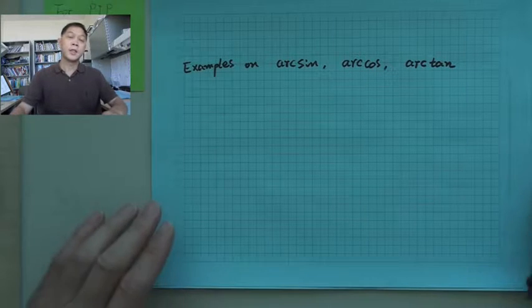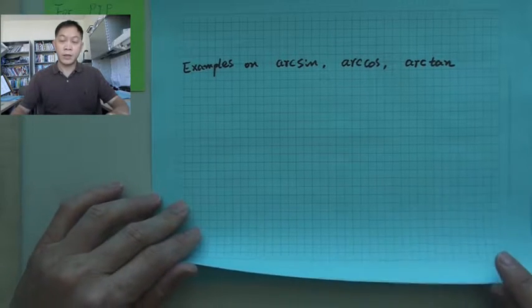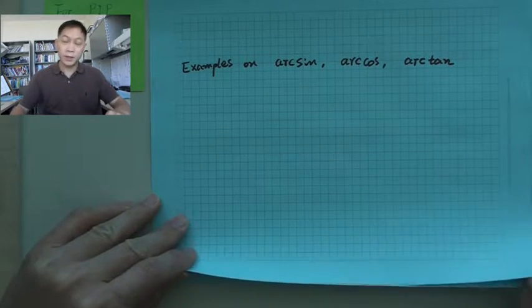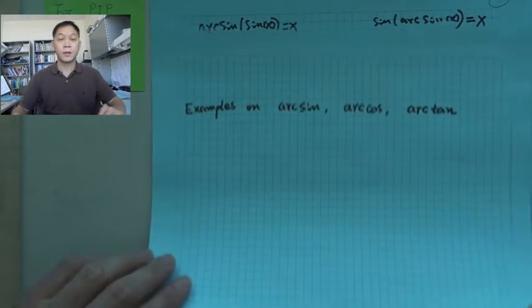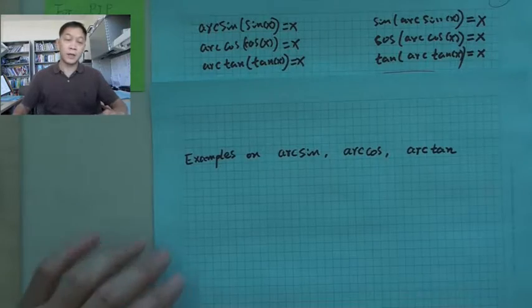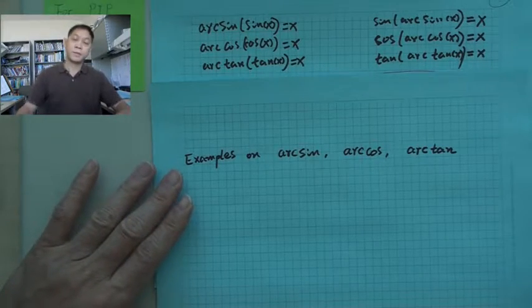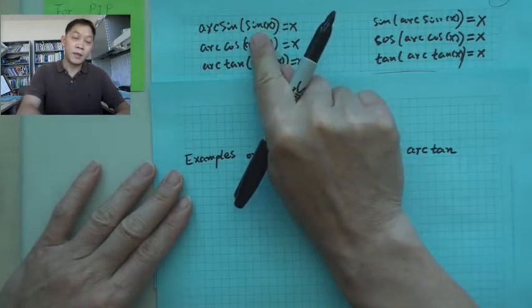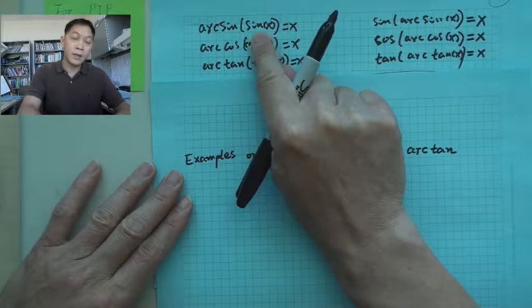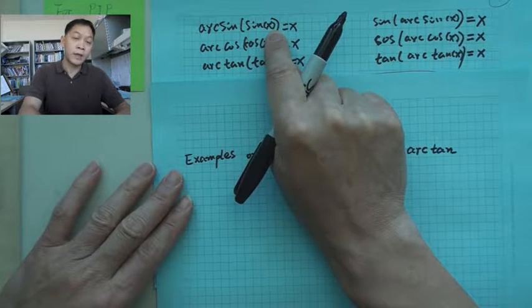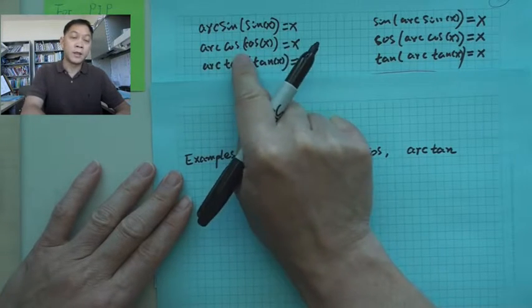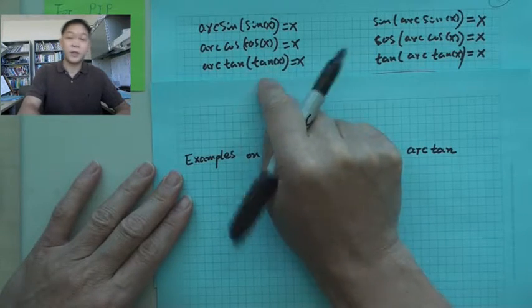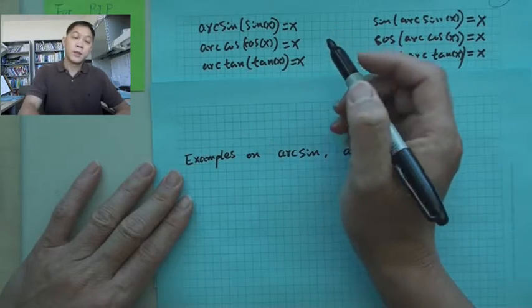Before we do that, let's review the formulas we have learned before. Those are the identities. We know this one started with sine, sine and then arcsine. So are the cases for cosine and tangent.